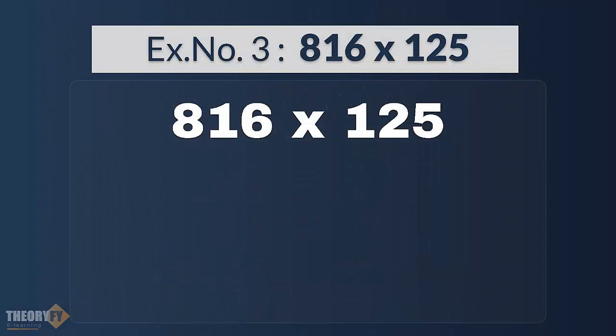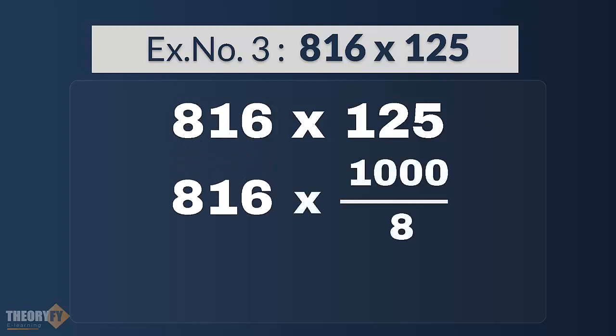Now, example number 3, 816 into 125. Now, 125 is actually 1000 divided by 8. So, the same thing what we are going to do here is, first divide the multiplicand, which is 816 here, by 8 and then just put three 0s after it. You will have your answer.